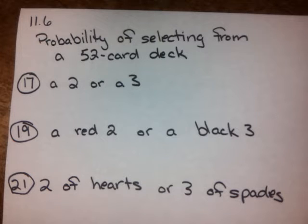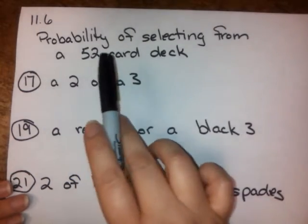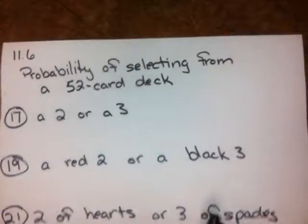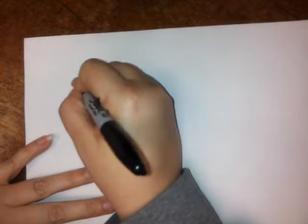These are coming from section 11.6, and I'm looking at numbers 17 through 21. But before I get too far into it, because we're talking about probability, I want to make sure we understand what we're looking for: the probability of something happening, the probability of an event happening.